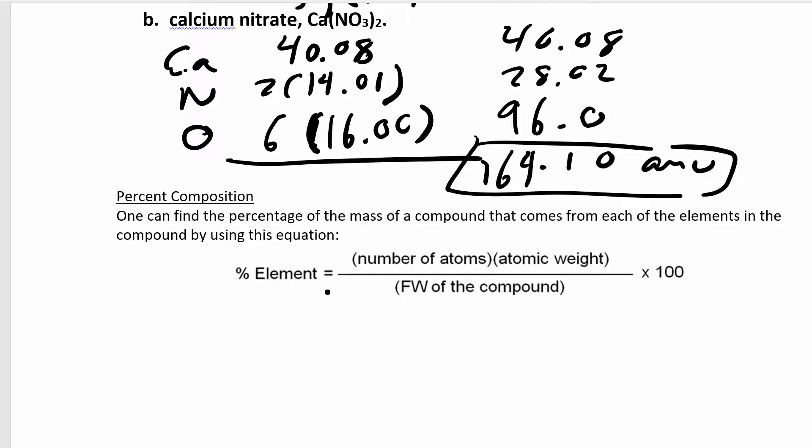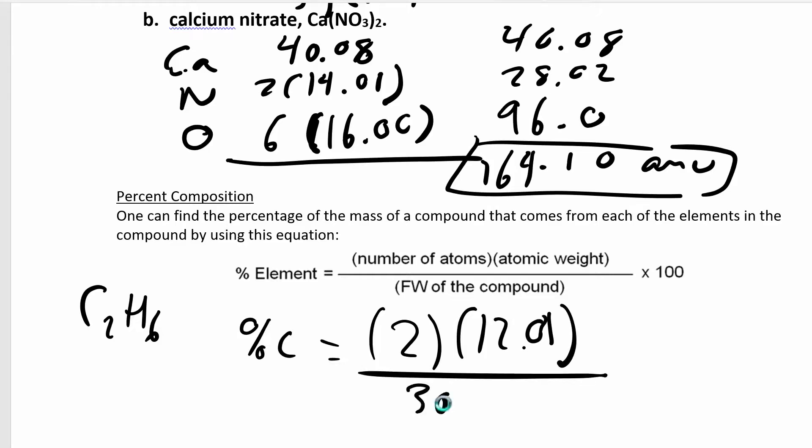if you look at ethane, C2H6, and you want to know what percentage of the mass is due to carbon, percent carbon is the number of carbon atoms, 2, times the atomic mass of each carbon, 12.01, divided by the formula weight for the whole compound, which was 30.08. Multiply that by 100. That's how you get the percent. When you work that out, you get 79.85%.